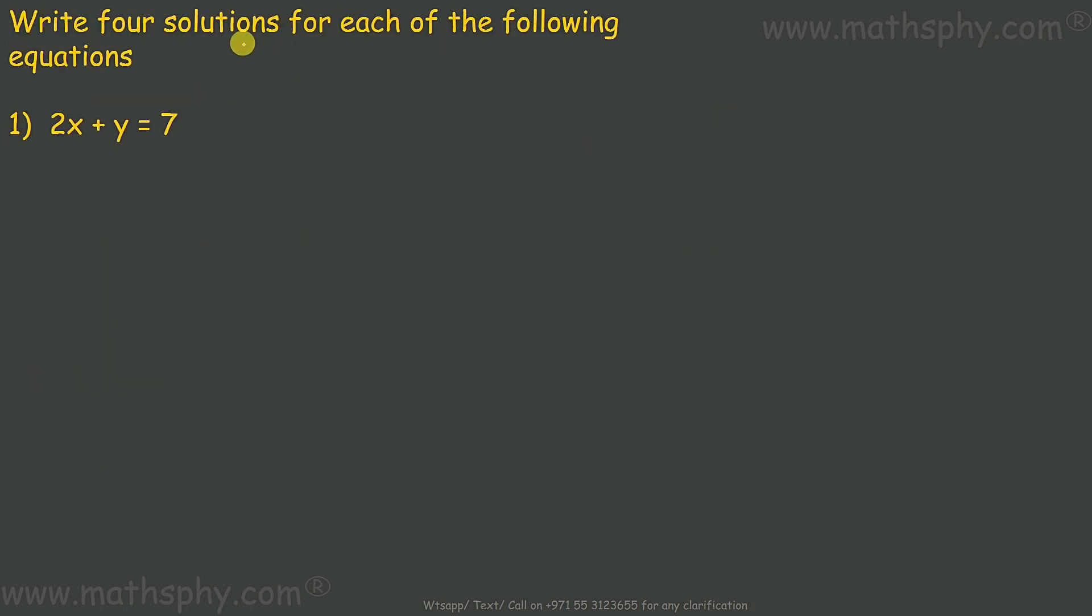Okay, four solutions - you can write infinitely many solutions for this. You write it this way. 2x plus y equals to 7, let's take y this side and 7, 2x goes this side becomes negative. Now, you can, as I said earlier, you can think of any value for the x. It says four solutions, so I'll start with smaller numbers. I'll start with 0, then I can take 1, I can take 2, I can take 3, I can take minus 5, minus 100. Whatever you like, you can think of, you can take.